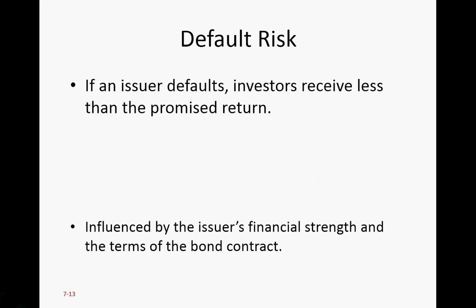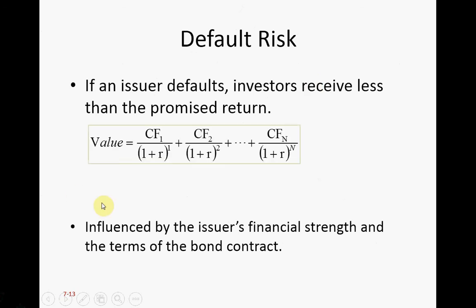If an issuer defaults, the investor receives less than the promised return. Some of the cash flows may disappear. You may just receive coupon 1, coupon 2, coupon 3, but you're not receiving coupon 4, coupon 5 as promised.